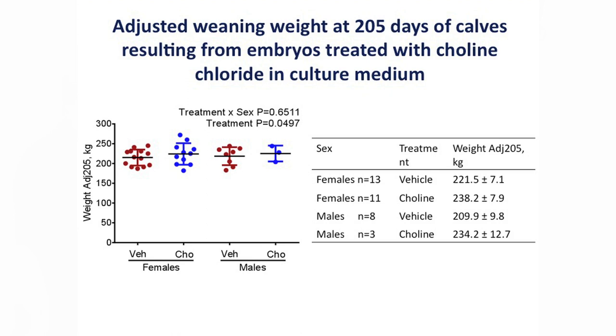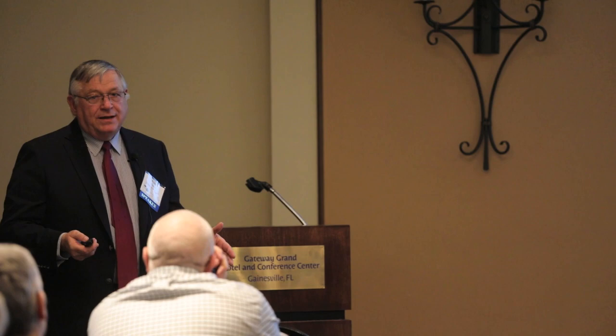We're going to repeat this experiment with in vitro produced embryos, take the animals to slaughter to evaluate whether the differences persist, and then do another experiment with Nicholas DiLorenzo where we'll feed rumen-protected choline around the period from AI until day 7 to see whether we observe the same kind of programming effect.